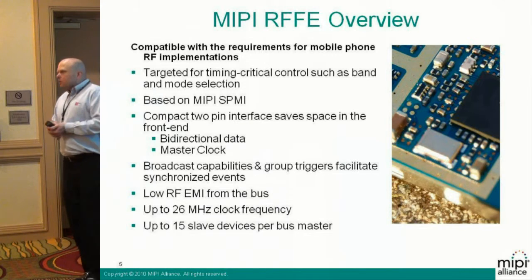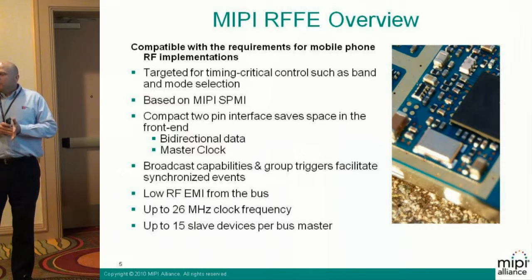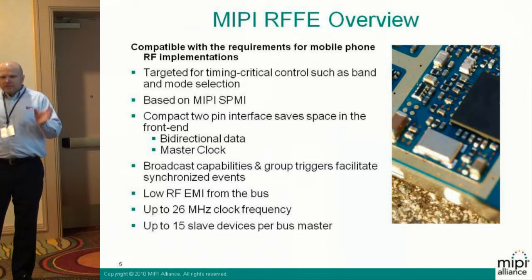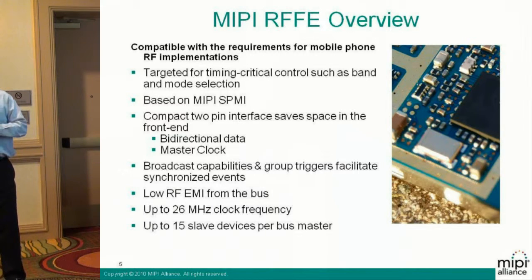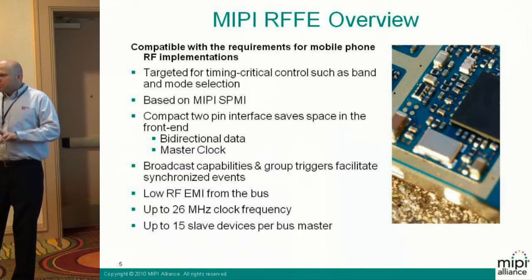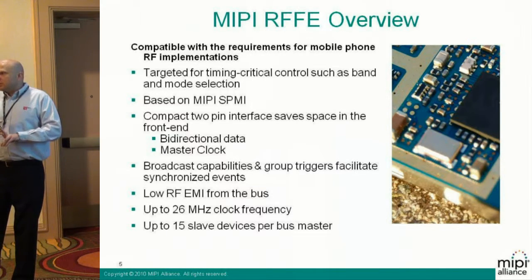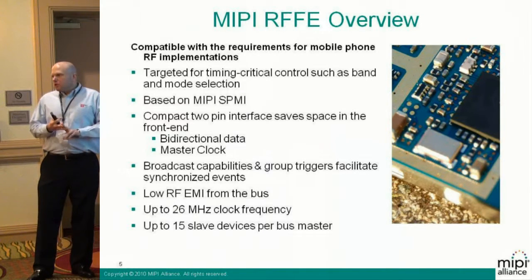This is the technical overview. It's targeted for timing-critical control, such as band and mode selection — for example, when the cell phone switches from 850 MHz to PCS. This bus will align all the components that need settings changed. Based on MIPI SPMI, it's a two-wire bus, which is welcome for people who don't have enough pins on their chips. There is no enable line; there is a device ID instead. We have bi-directional data and a master clock — that's it.